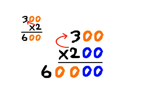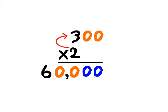And slip in the comma. So the answer is 60,000. And we got it by bringing down the blue zeros, bringing down the orange zeros, then multiplying 2 times 3 and putting that over in front.